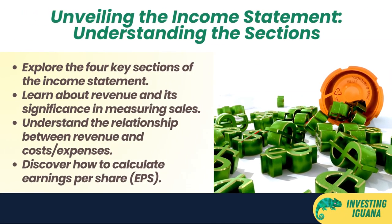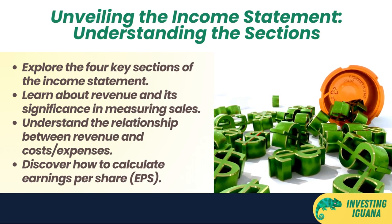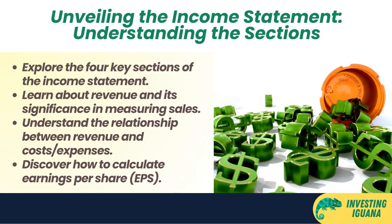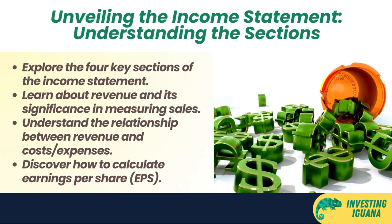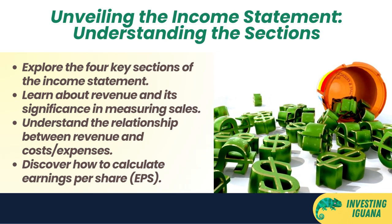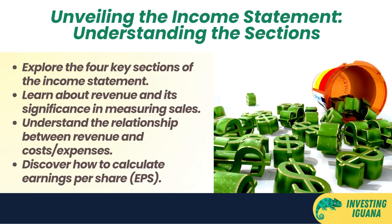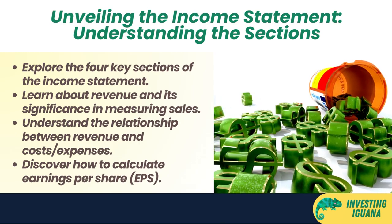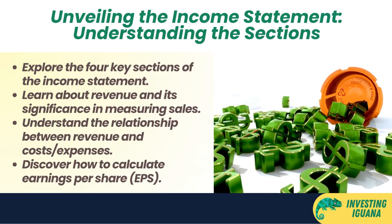The income statement has four main sections: revenue, expenses, income, and earnings per share. Revenue is the amount of money that a company earns from selling its products or services. It's also called sales or top line because it's usually the first line on the income statement.